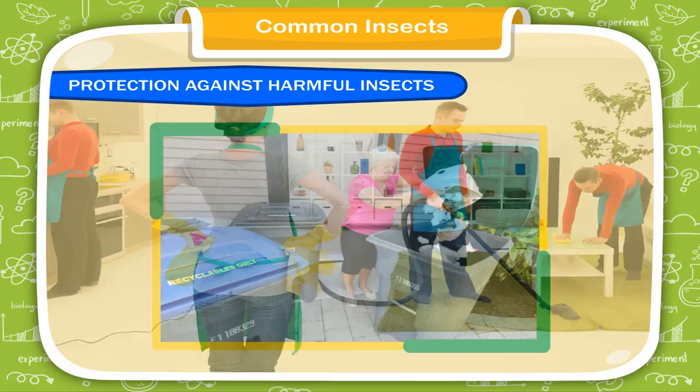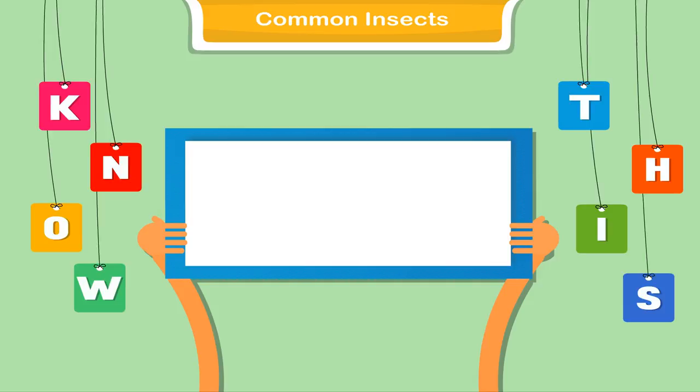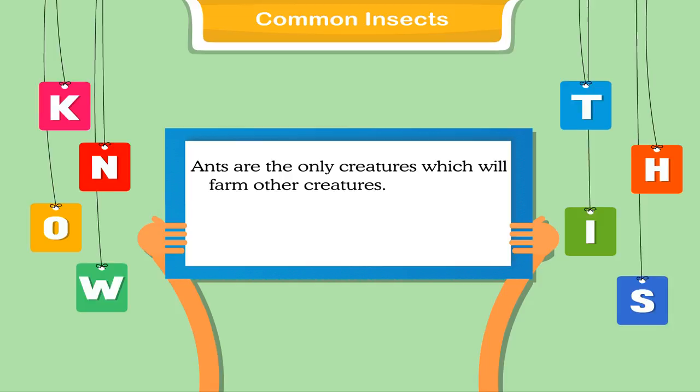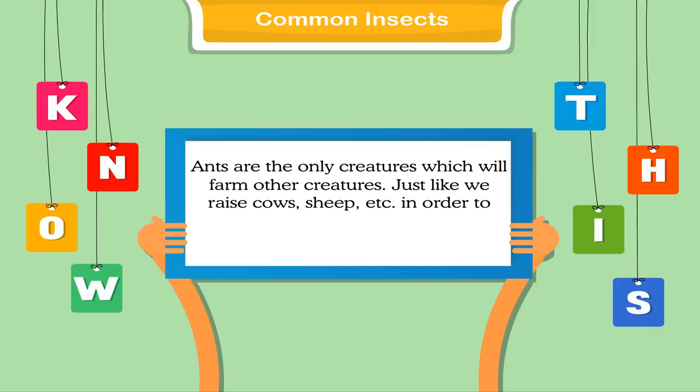Know this: Ants are the only creatures which will farm other creatures. Just like we raise cows, sheep, etc. in order to obtain a food source, ants will do the same with other insects.